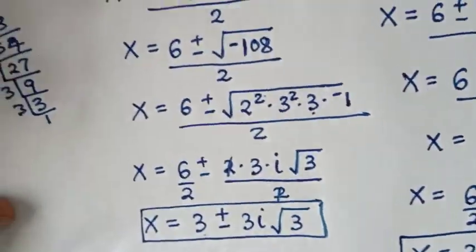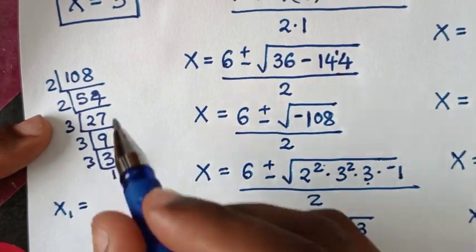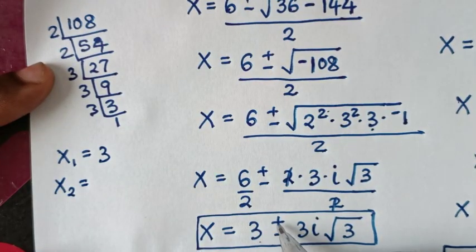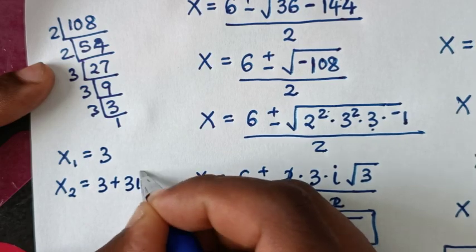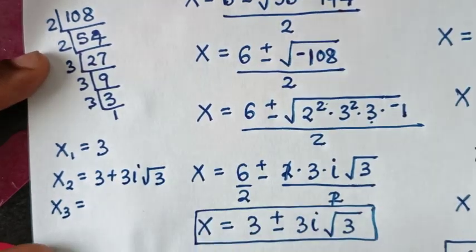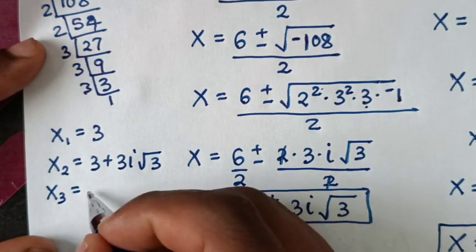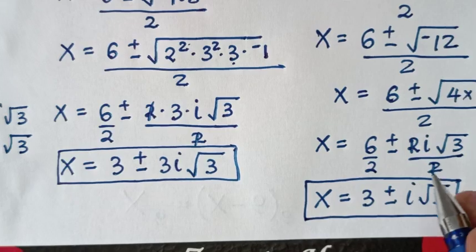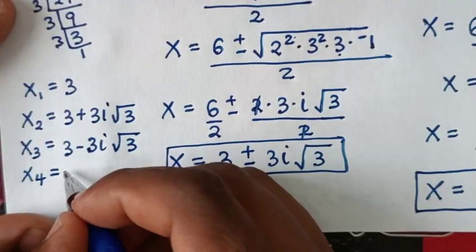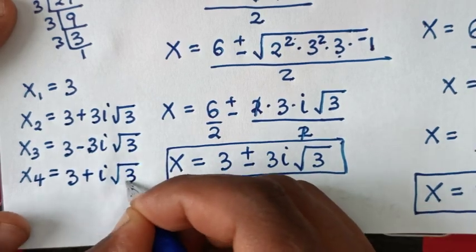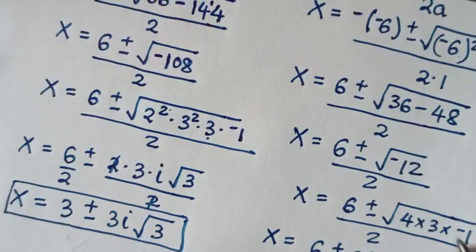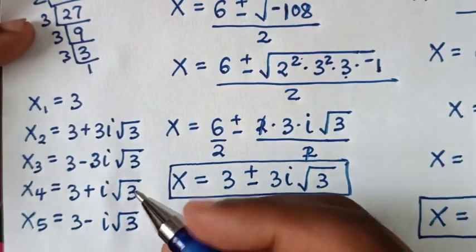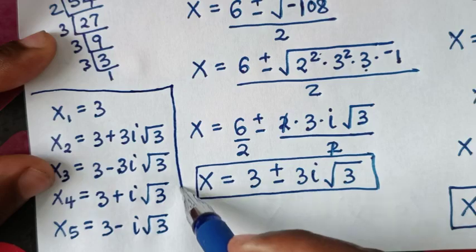In conclusion, we have 5 values of x: the first value is x equals 3 (the real solution); the second value is x equals 3 plus 3i square root of 3; the third value is x equals 3 minus 3i square root of 3; the fourth value is x equals 3 plus i square root of 3; and the fifth value is x equals 3 minus i square root of 3. So we have 1 real solution and 4 complex or imaginary solutions.